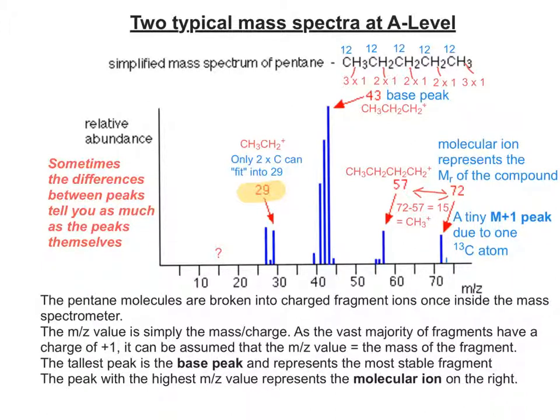I said there was two typical mass spectrum types. Let's now have a look at the other one. This one we've just done is to do with organic compounds. The other one is to do with isotopic mixtures of the same element.